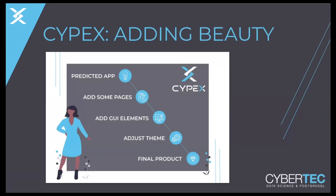Our process is: generate the application and then start with modifications. Add some pages, change the menu entries, turn a table into a pie chart, add a map, adjust some themes — and then at some point you have the final product. Everything here is interactive. If you add a page after you've adjusted the theme, no problem. That's basically what it is.